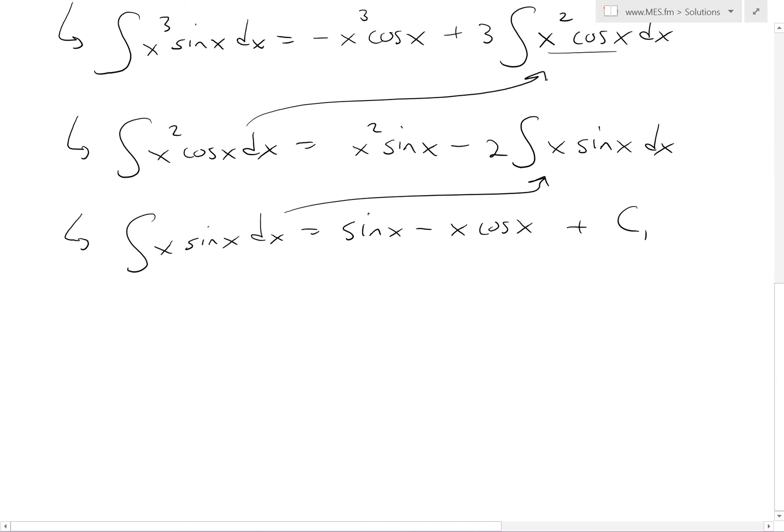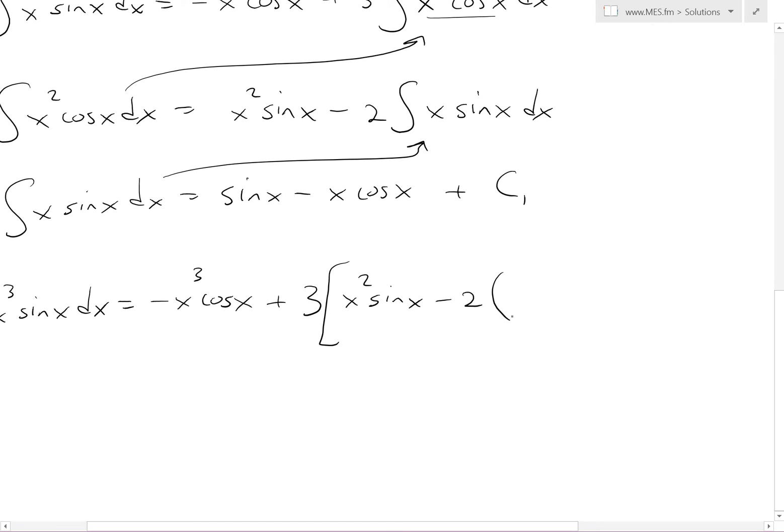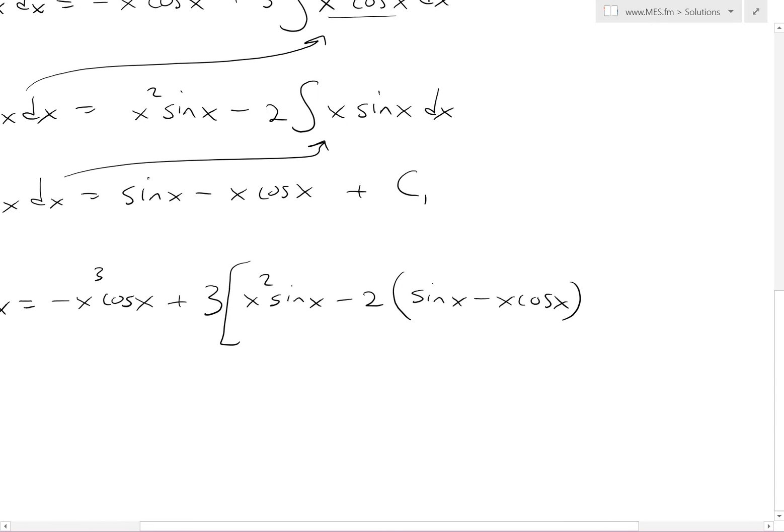Now we plug this back into here, and then this back into here. So we get overall: x³ sin(x) dx equals -x³ cos(x) plus 3 multiplied by this. So we have x² sin(x) minus 2, and then the 2 has inside, inside right here, sin(x) - x cos(x).